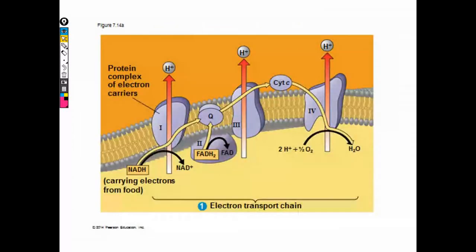I'm going to flip ahead just for a hot second. This is the same thing that I drew just without me having to redraw it, right? On Monday, we were talking about the electron transport chain, which is the first step of oxidative phosphorylation.